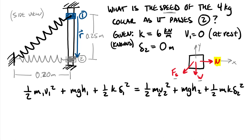Now let's eliminate terms that go to zero. We know v1 was zero — the system starts at rest. For the datum, I prefer to place it at the lowest possible location of the mass. So this will be my datum for h, with positive h measured upward from there. I'll have a positive h1 and a zero value h2, since that's where the datum is established. The spring was unstretched at location two, so delta two equals zero.